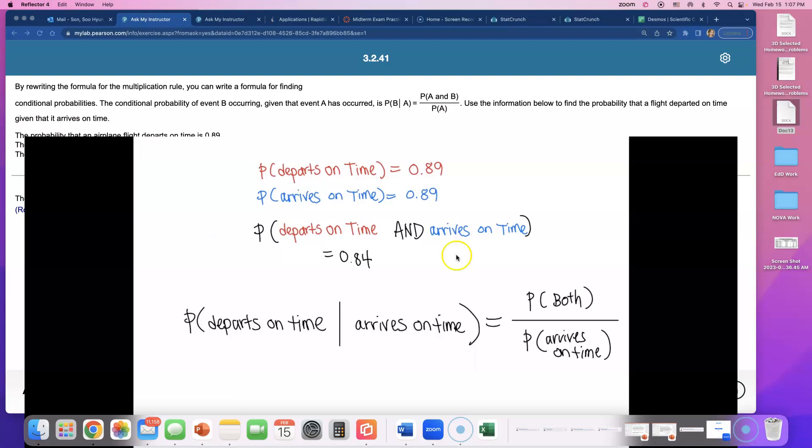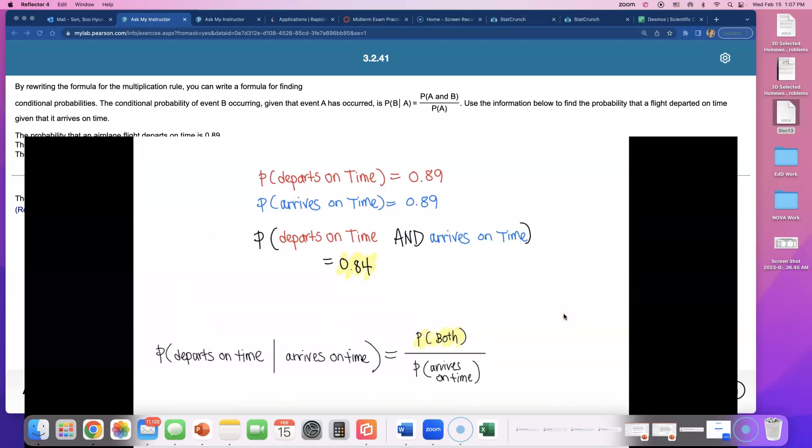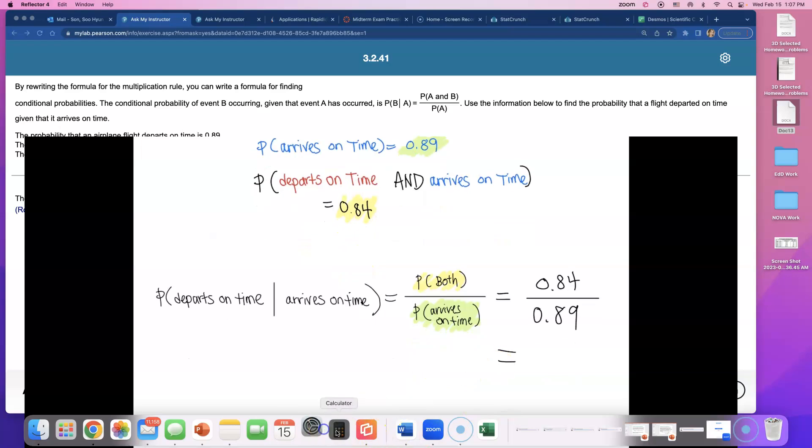Okay, they gave us all the numbers, we just gotta plug them in. So what's the probability of both happening? That is 0.84. So you will have to divide and put 0.84 on top of the fraction because that is the probability of both of these events happening. And in the bottom of the fraction, we have to put the probability of arriving on time. Let me go find that. It's that one, 0.89.